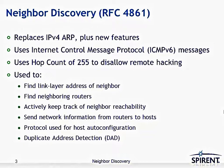Neighbor Discovery is used for a variety of features, such as to find the link layer addresses of neighbors — in other words, MAC (media access control) addresses, such as an Ethernet address — to find neighboring routers, and to actively keep track of neighbor reachability. It sends network information from routers to hosts and is used for host auto configuration. It could also be used for Duplicate Address Detection, or DAD.